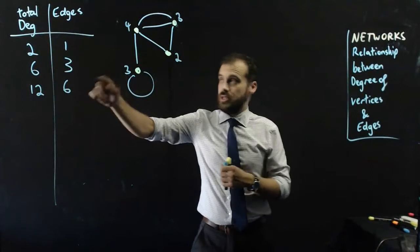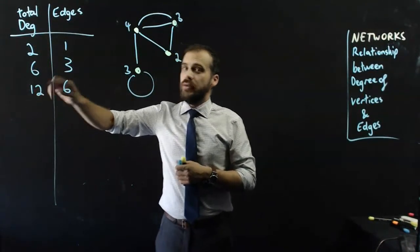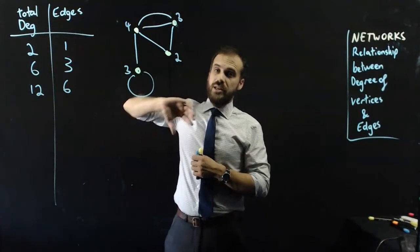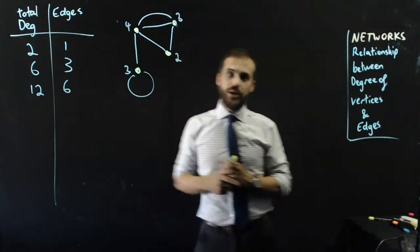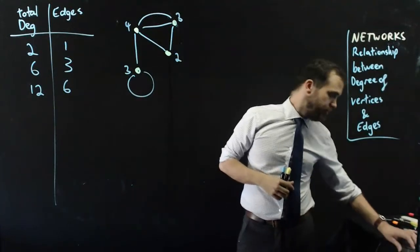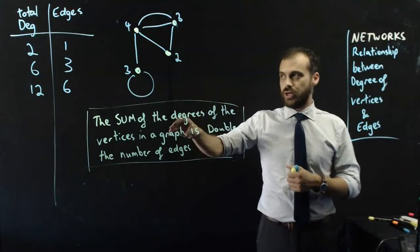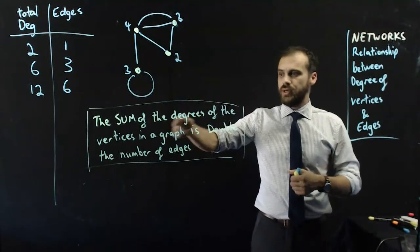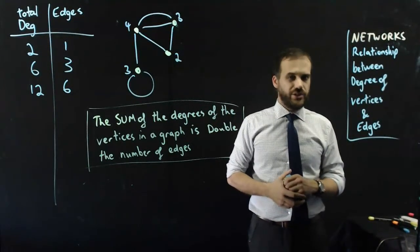So, the relationship I hope you're seeing is 2 and 1, 6 and 3, 12 and 6. The total degrees in a graph is always double the total number of edges in a graph. The sum of the degrees of the vertices in a graph is double the number of edges.